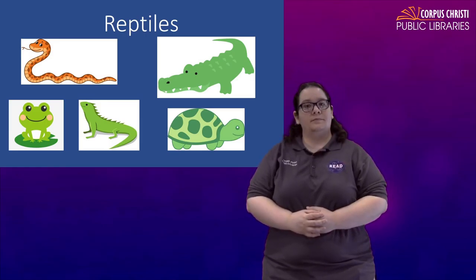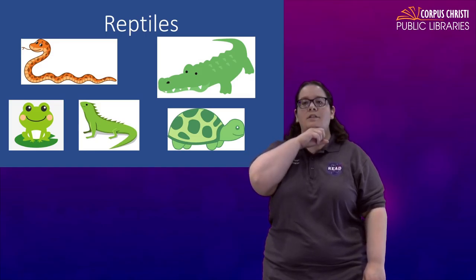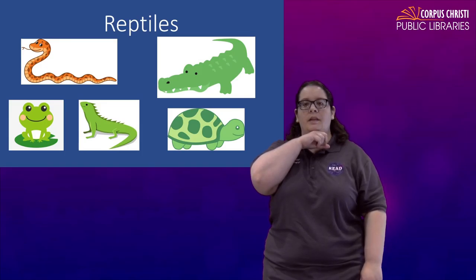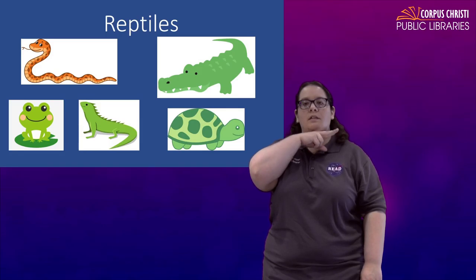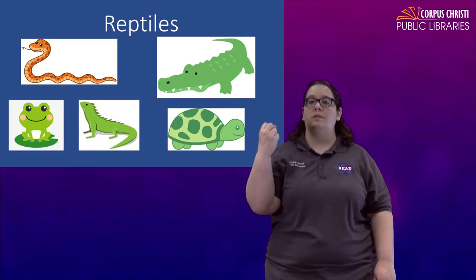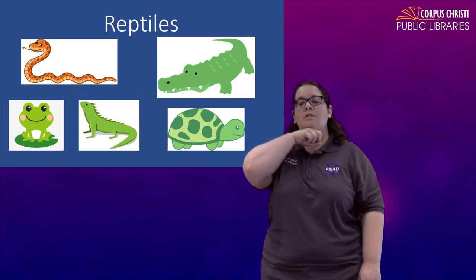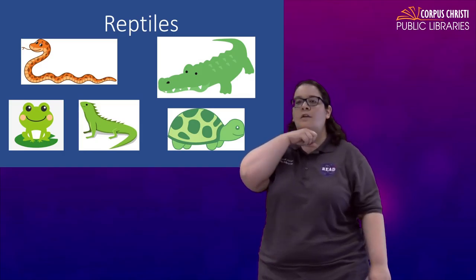For a frog you're going to make a fist under your chin. Just let your chin rest on your knuckles and you're going to flick out your index and middle finger. Like this. Kind of like when we did the number 12. Remember we flicked it out. So you're going to do that just under your chin. Frog.